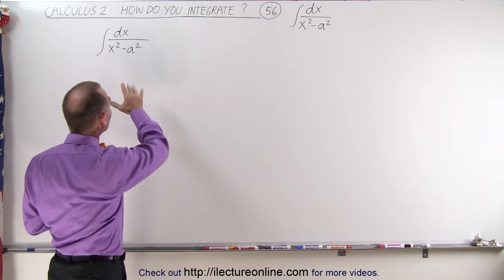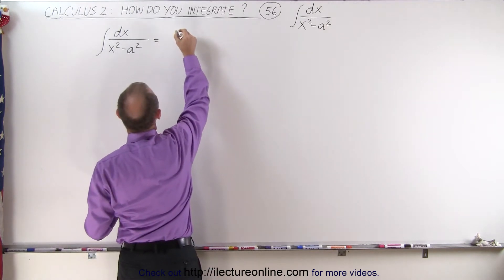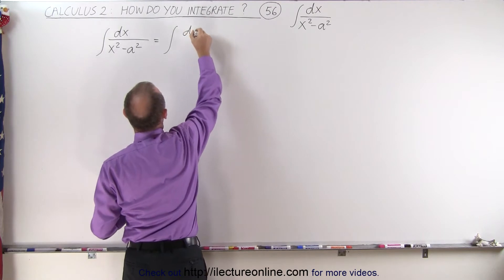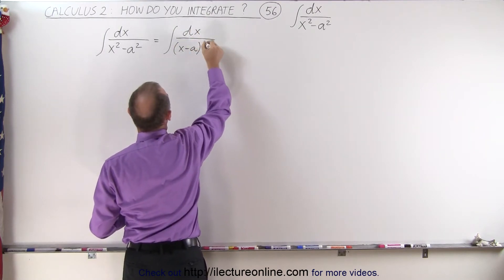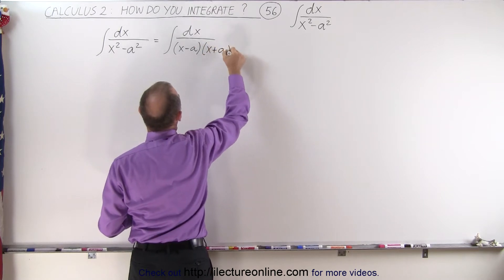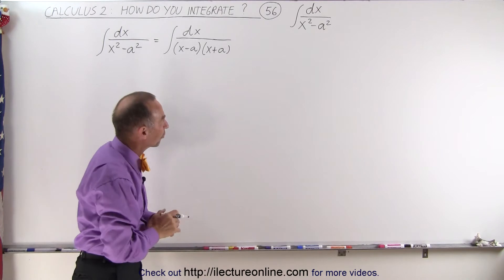Again, we can see that this is the difference of squares, which means that this can now be written as the integral of dx over, and this becomes x minus a times x plus a in the denominator, which means we can again use the method of partial fractions.